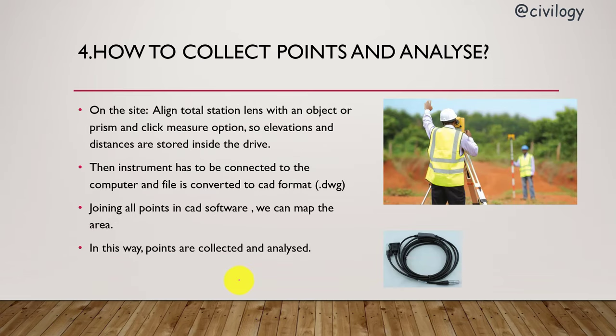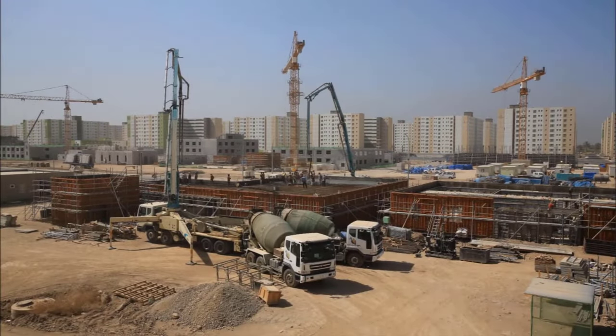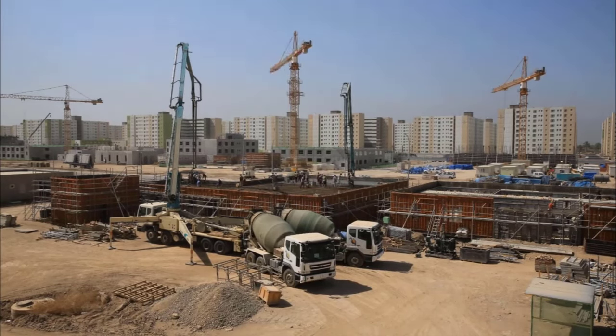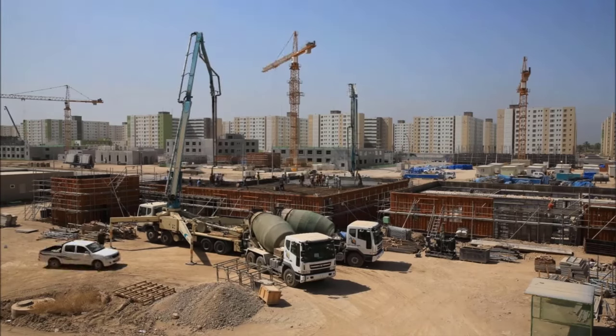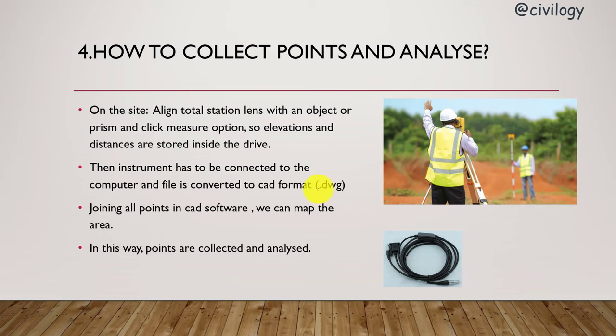How to collect points and analyze: You can see in the picture the observer has to align the total station lens with an object or prism and click the measure option. Elevations and distances are stored inside the drive. At another point, the prism has to move and readings are taken accordingly.